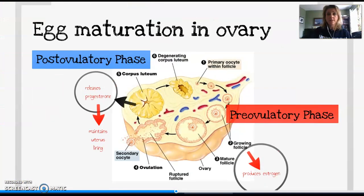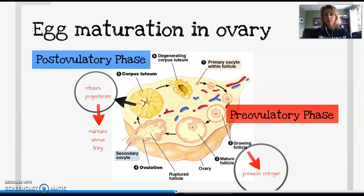All right, let's take a look at our ovarian cycle. The ovarian cycle consists of two phases: the pre-ovulatory phase — everything that leads up to ovulation — and the post-ovulatory phase, or everything that happens after ovulation. These two phases have different names. The pre-ovulatory phase is also called the follicular phase, because that's the part where the follicle is actually growing. The post-ovulatory phase is also called the luteal phase, because the follicle becomes the corpus luteum after ovulation.